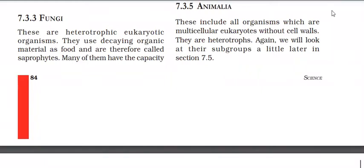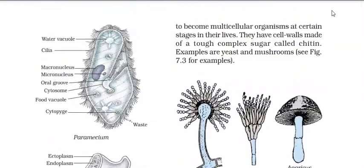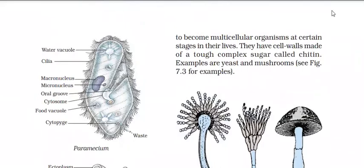Today we will learn about kingdom fungi. These are heterotrophic eukaryotic organisms and they use decaying organic material as food. Therefore they are known as saprophytic. They are multicellular except yeast — yeast is unicellular. Many of them have the capacity to become multicellular organisms at certain stages in their life. They have a cell wall made of chitin, which is a tough complex sugar.